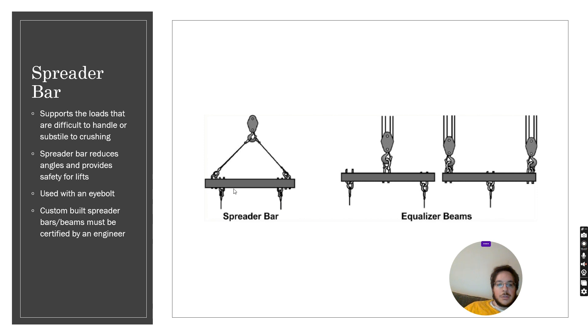So we can use spreader bars or equalizer beams to spread our load. In this case we have a spreader bar so now we've got two points of attachment of our load even though we've only got one beam hoist. With an equalizer beam we've got one point of attachment but we've got two hoists and this could be in a situation where one hoist is not strong enough to lift the item or where we want to lift at an angle.